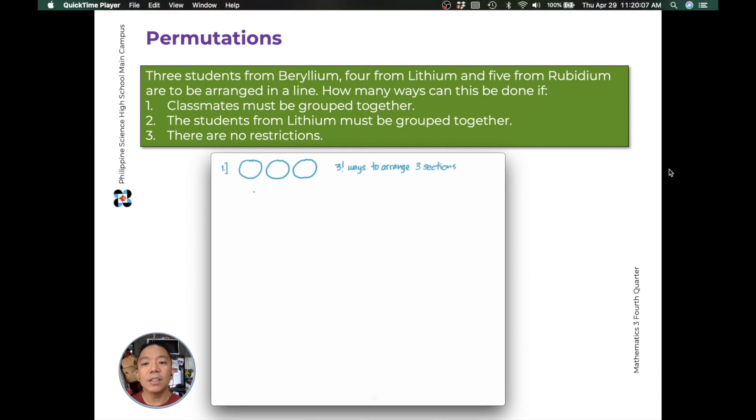Now within each circle, let's start with beryllium. We have 3 possible ways of arranging the beryllium students in a line. That's another 3 factorial ways. Looking at lithium as a group, we have 4 different ways of arranging the lithium students in a line. That's 4 factorial ways. And finally, for rubidium, we have 5 students to line up. And that will be 5 factorial ways to arrange them in a line. So the total ways to arrange beryllium, lithium, and rubidium, plus considering how many ways they can be rearranged as section groups, we multiply all these possibilities together.